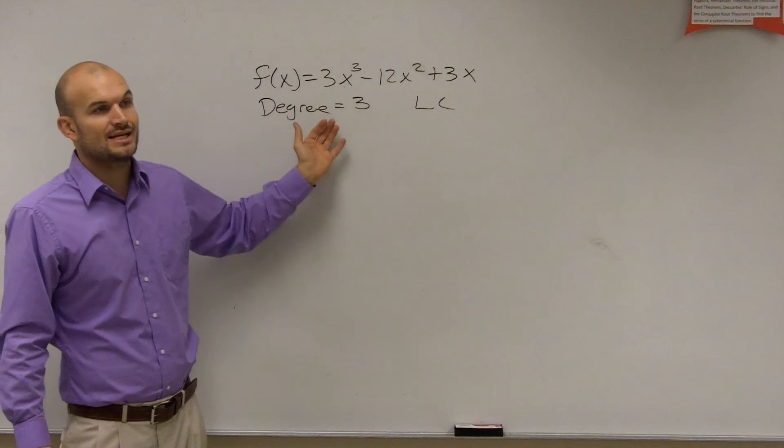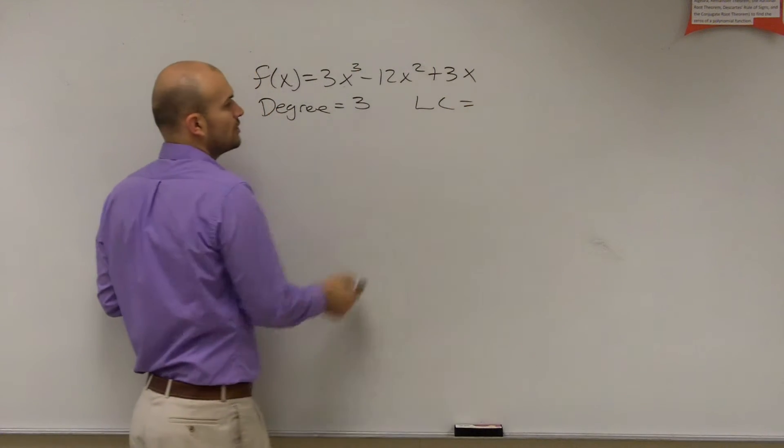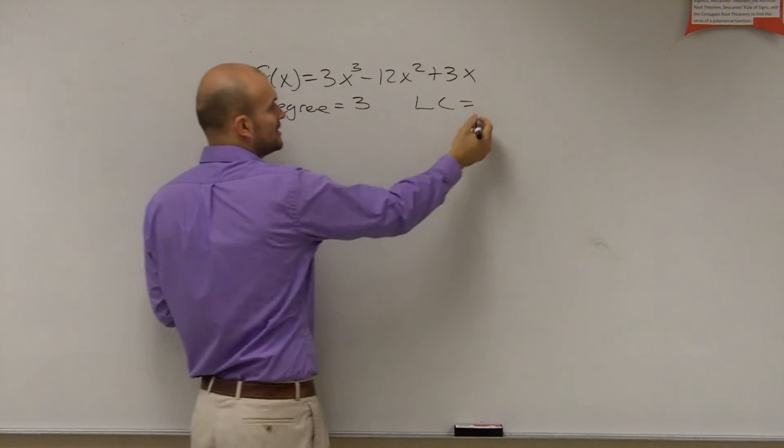So my degree is going to be 3. Make sure it's in descending order, if it's not already, to make sure you can determine your degree. Then I find my leading coefficient, which is my coefficient of my leading term, which is 3.